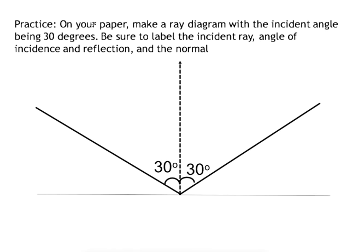The last thing is to label the diagram. This is the incident ray, this is the reflected ray, this would be my angle of incidence, this would be my angle of reflection, and lastly I've got my normal here, which is perpendicular to my reflecting surface.